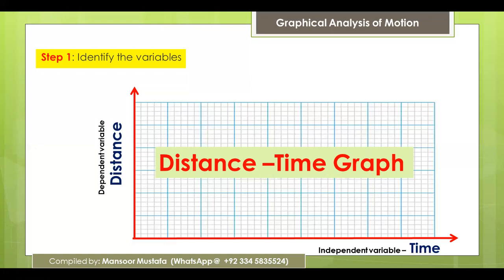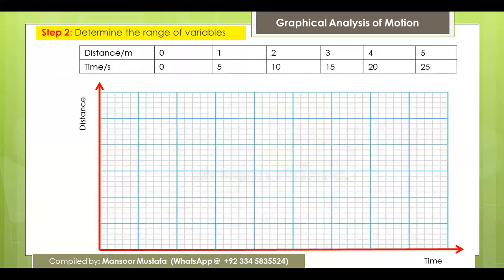After identifying the variables — which is independent and which is dependent — the next step is to determine the range of variables. This means finding the starting and ending points of your data and what the different data points are, so you know how to accommodate them in your graph.